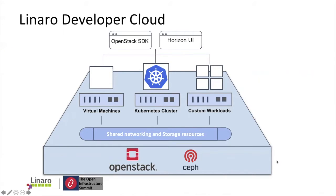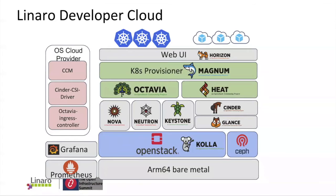We are based on OpenStack and CEPH as Infrastructure as a Service. On top of this, we can support VM-based workloads, virtual machines, and Kubernetes as a Service. You can also leverage Heat templates to organize your workloads. Our infrastructure is deployed by OpenStack Kolla, and on top of this are the main OpenStack components for VM provisioning and networking. We have enabled Magnum, Octavia, and Heat to support ARM64-based Kubernetes as a Service.